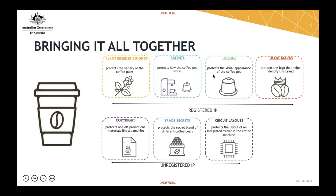To give you an idea of how IP can work together, we can look at a cup of coffee. A plant breeder's right could cover the variety of the coffee plant the company is making this coffee from. Patents could cover how their coffee pod works. Designs could protect the appearance of the coffee pod, and trademarks could protect the logo that helps identify the brand. Copyright could protect promotional materials like a pamphlet. Trade secrets could protect the secret blend of coffee beans and circuit layouts could protect the integrated circuit within the coffee machine.